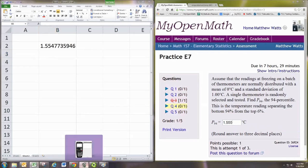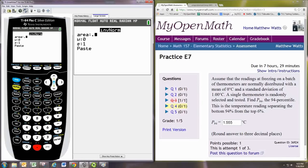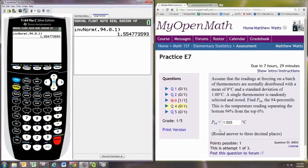On the graphing calculator, we hit 2nd VAR for the distribution menu and go to number 3, inverse norm. Tell it the area to the left is 0.94. Tell it the mean is 0, and the standard deviation is 1. Or just put in area, comma, mean, comma, standard deviation. And you get the same answer.